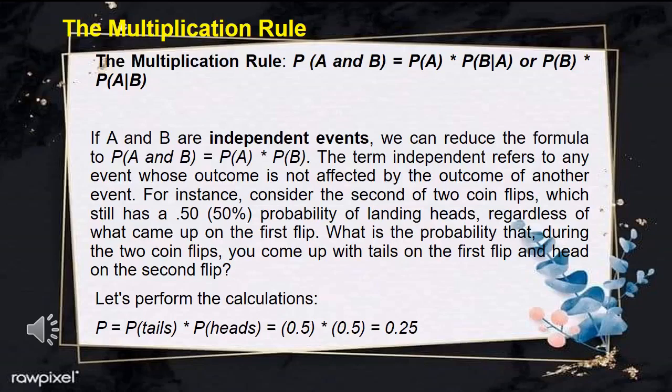For instance, consider the second of two coin flips, which still has a 0.50 or 50% probability of landing heads, regardless of what came up on the first flip. What is the probability that during two coin flips, you get tails on the first flip and heads on the second? The calculation: P equals P of tails times P of heads equals 0.5 times 0.5 equals 0.25.